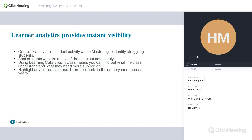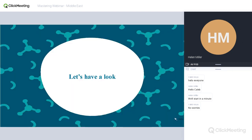If you use the two things in combination, across cohorts in the same year or across years, you might begin to see patterns appearing — perhaps with different instructors teaching different cohorts, or you might see that students' knowledge upon entering university is changing over time, with specific topics where they were once confident but are now less so. You could do something to address that and change the way you teach that topic. So let's actually have a look at Mastering.